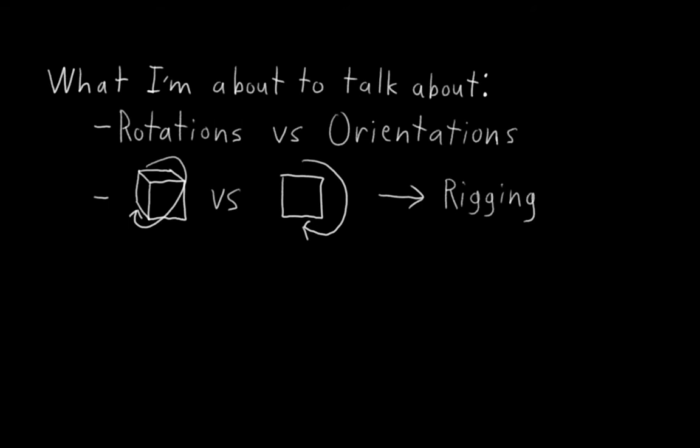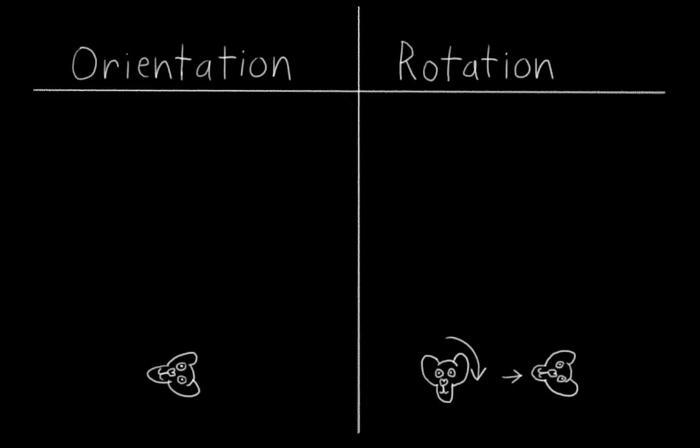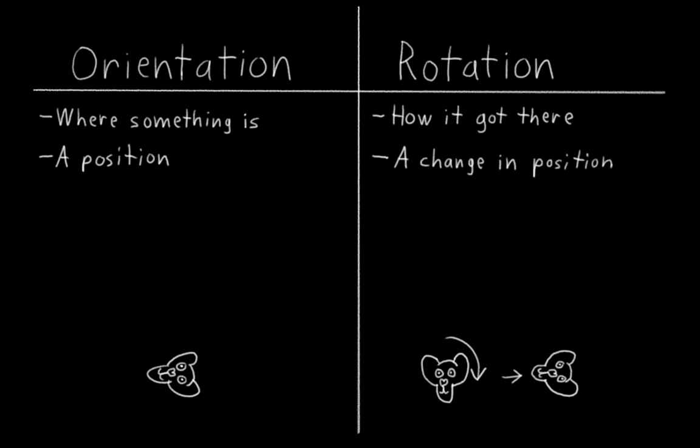So let's start with the difference between rotation and orientation. In short, orientation is where something is, and rotation is how it got there. Or in other words, orientation is a position, and rotation is a change in position. Hopefully that's fairly intuitive right off the bat, but I'm going to give some examples to help illustrate.